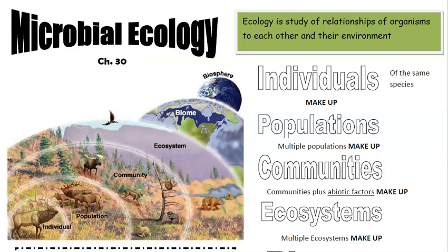Microbial ecology, chapter 30. This is basically a review of biology — ecology, different levels, symbiotic relationships, trophic levels, food chains and food webs — but we're applying it to microbes now.